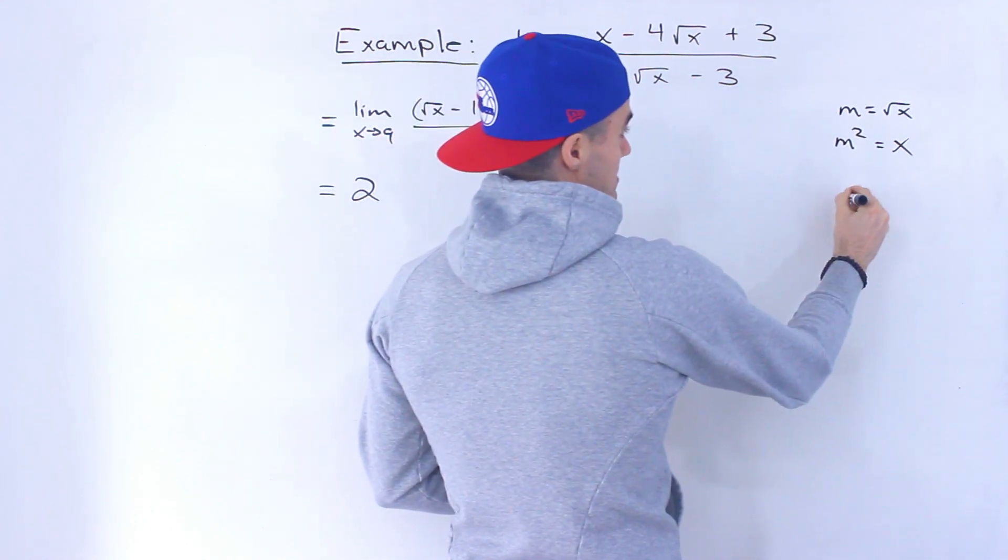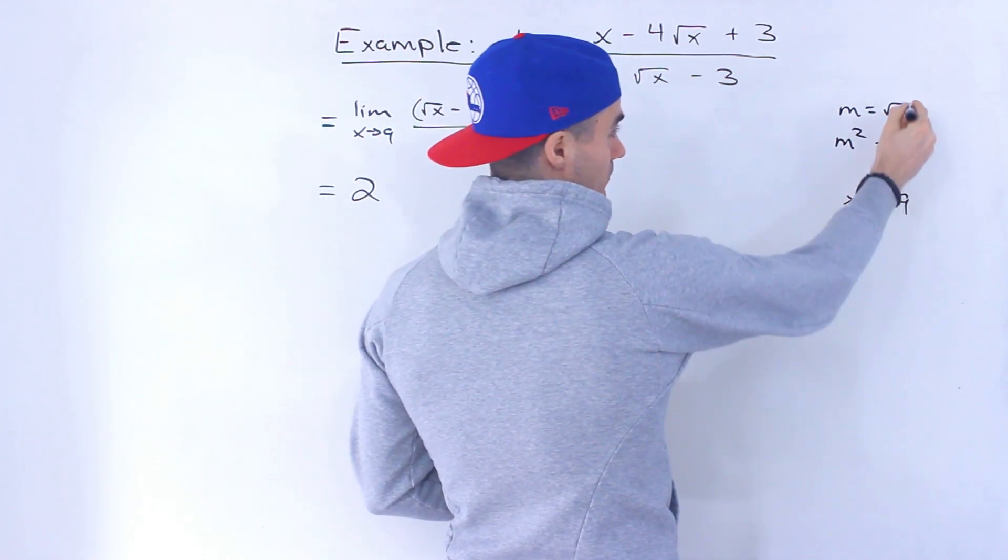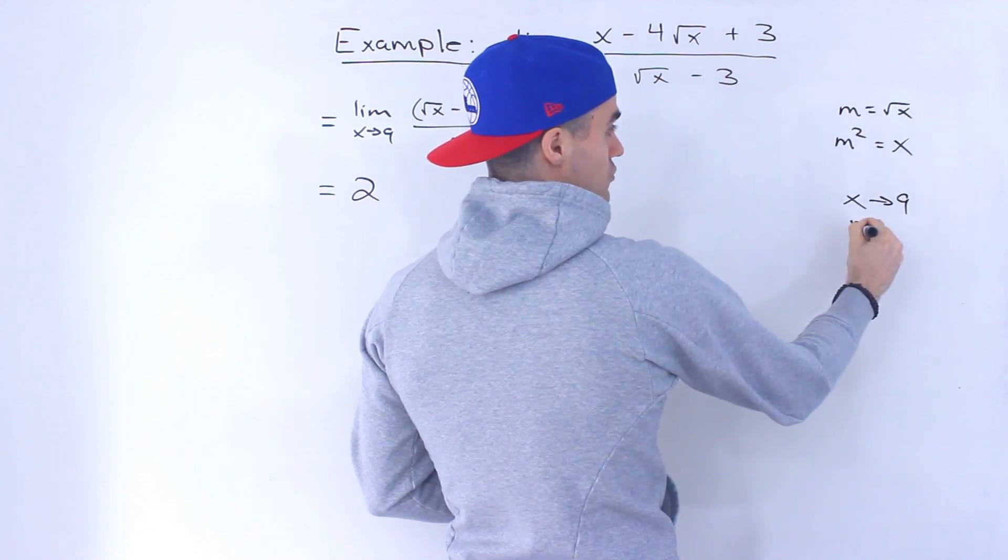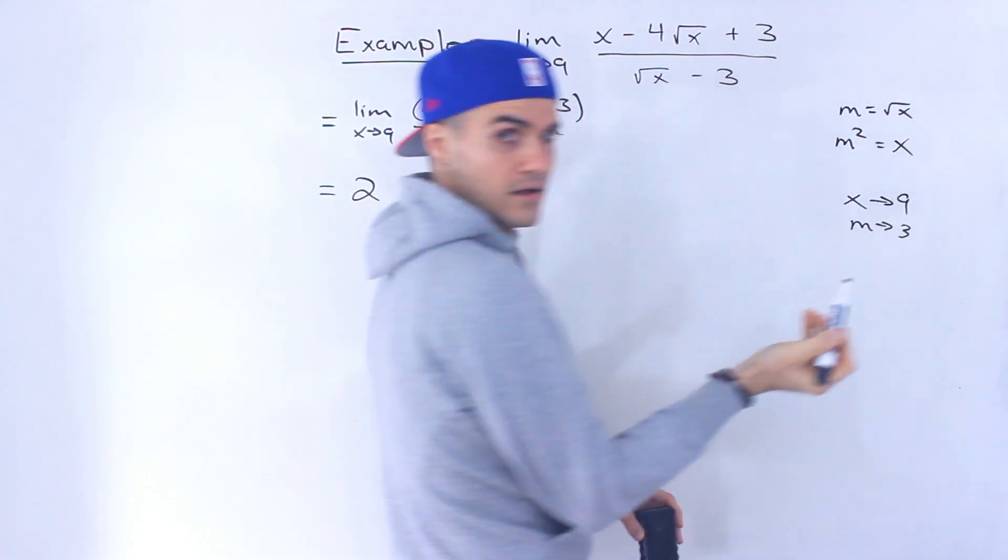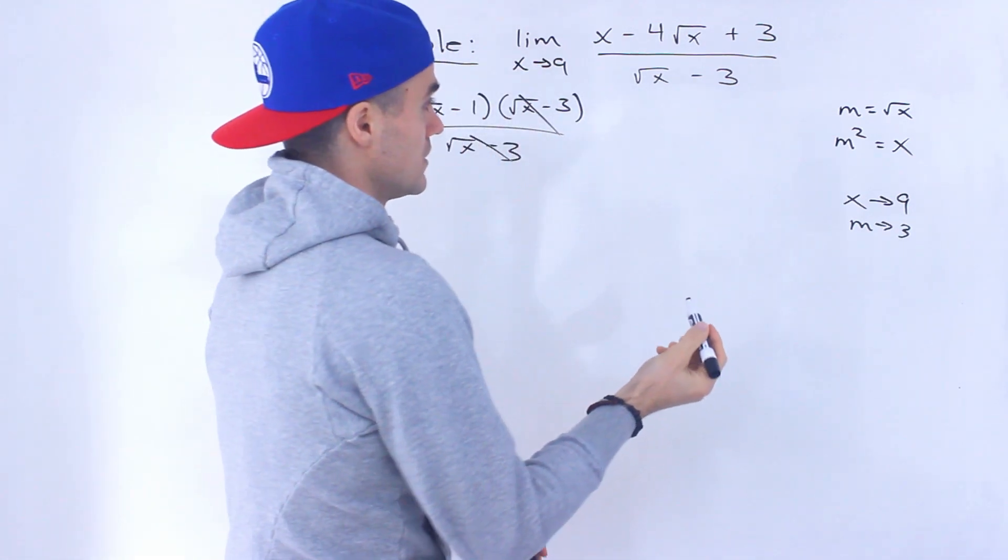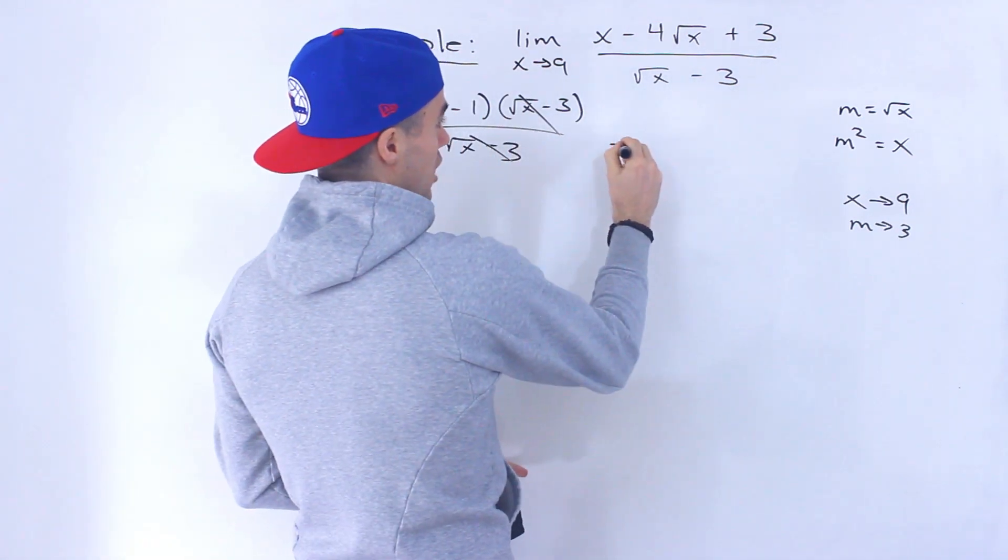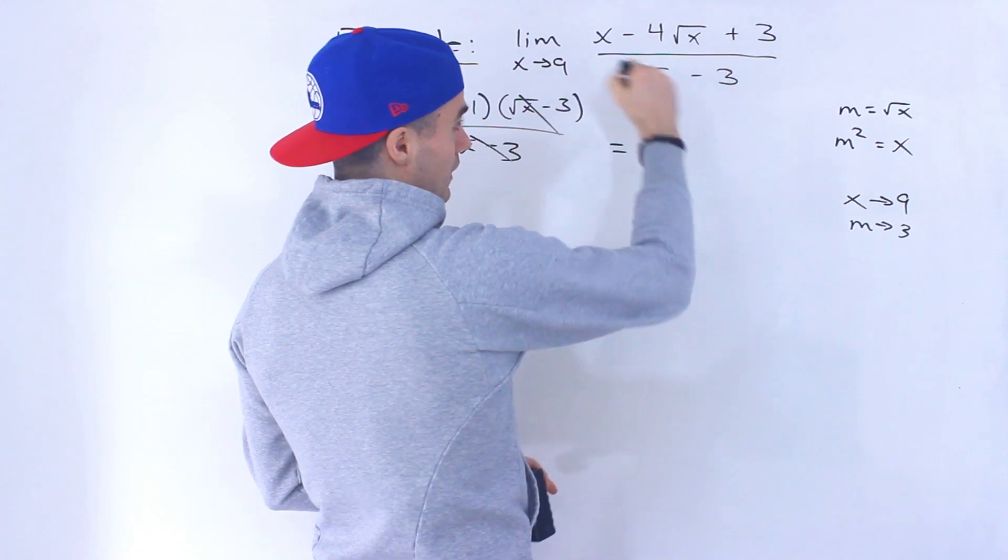And then also as x approaches 9, what is m going to approach? m is going to approach 3, right? Because the square root of 9 is 3. So notice that we can change everything here, all the variables.